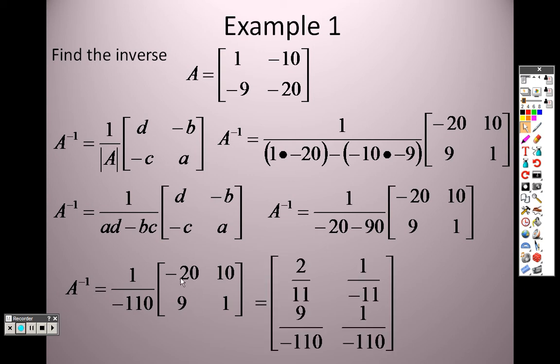So 1 over negative 110, I put that in there, and I get negative 20 over negative 110, which simplifies to 2 over 11. I get 10 over negative 110, and that simplifies to 1 over negative 11. I get 9 over negative 110, and that can't simplify, and when I multiply that through, I get 1 over negative 110, and there is your inverse for that.